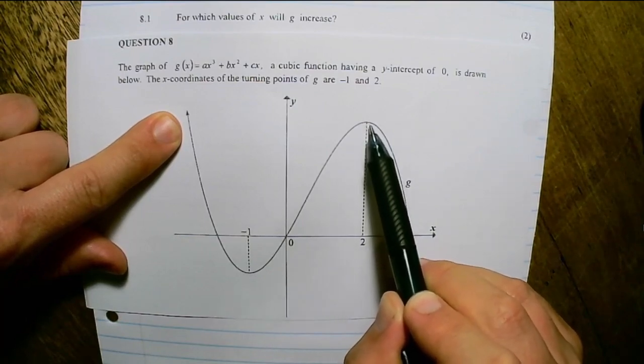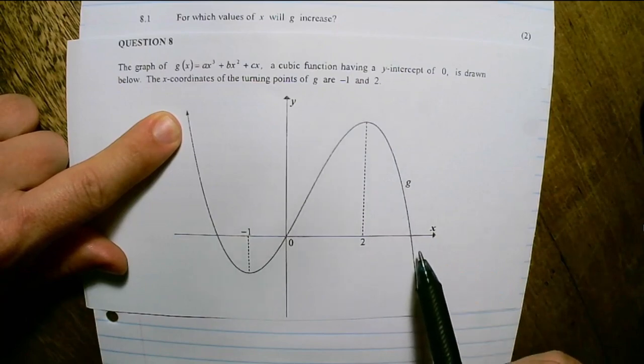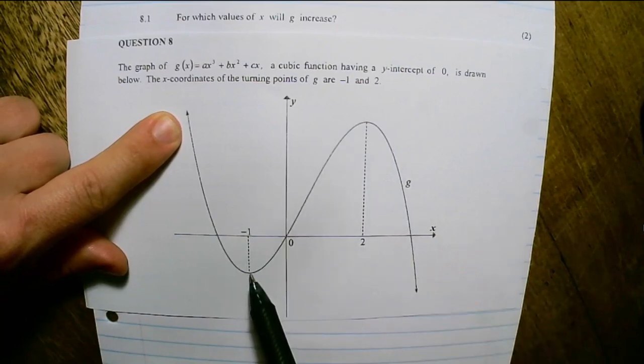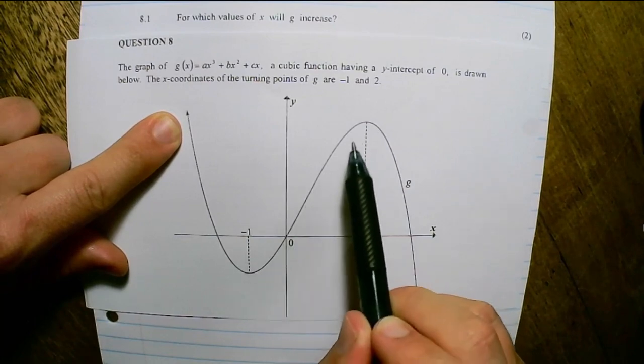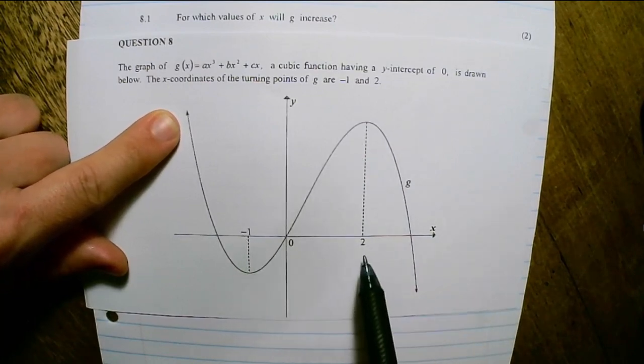And after 2, we are decreasing again. So for which values does the graph increase? And we can see that the graph increases between the x values of negative 1 and 2.